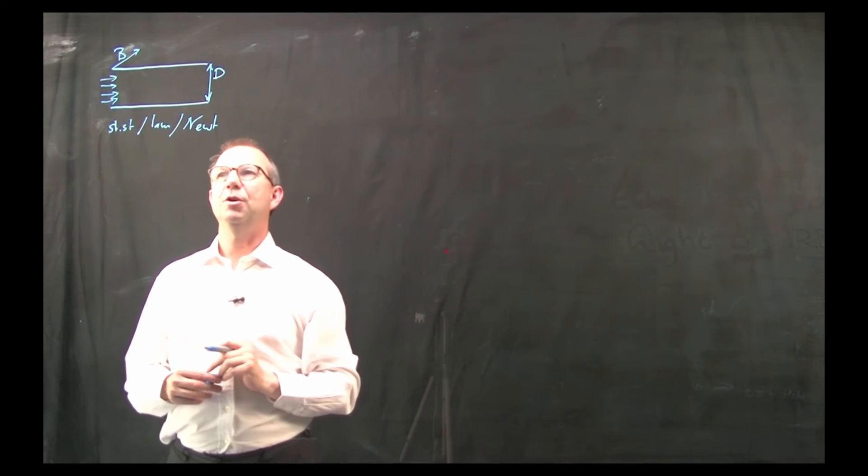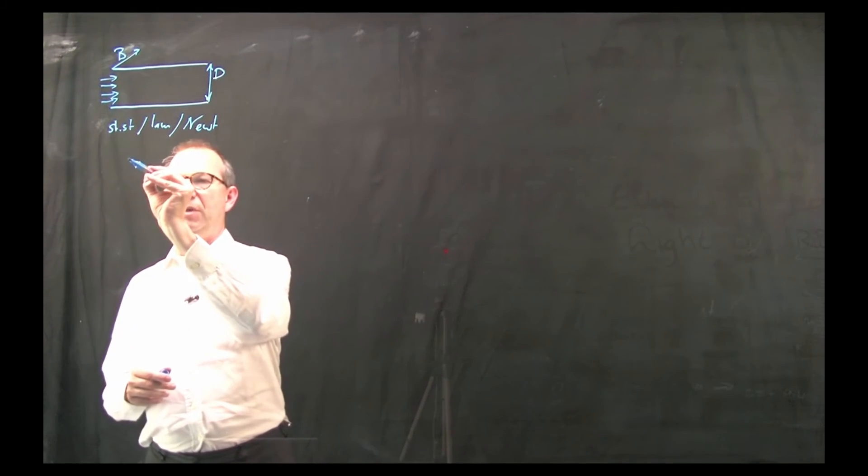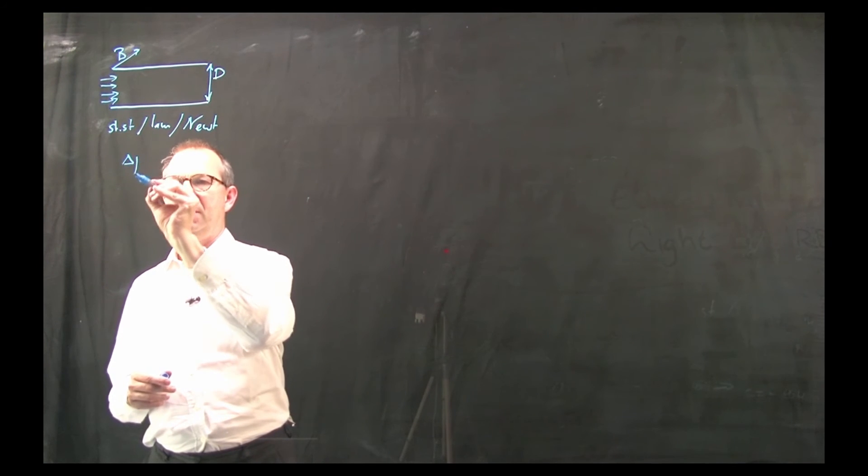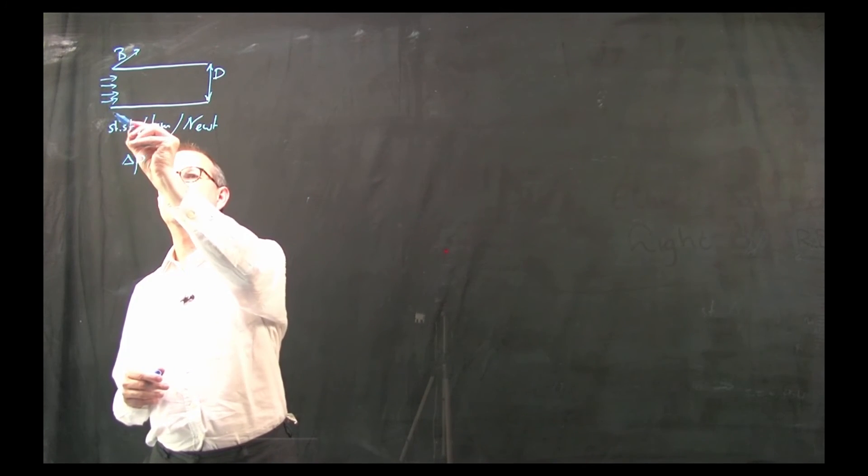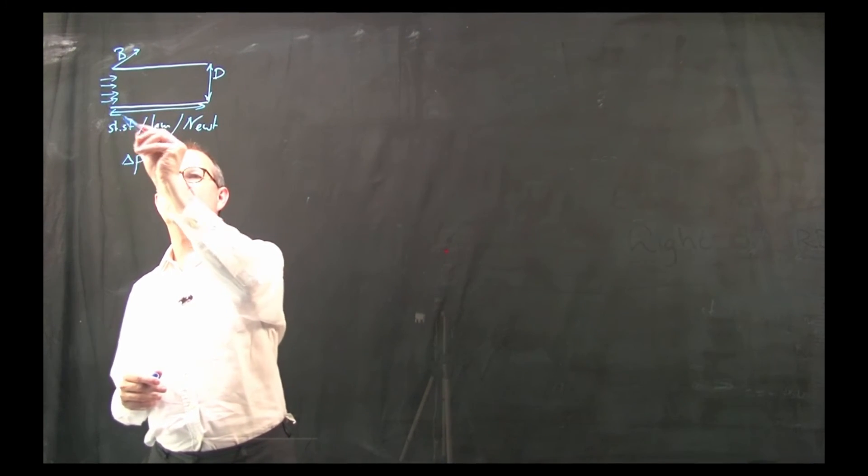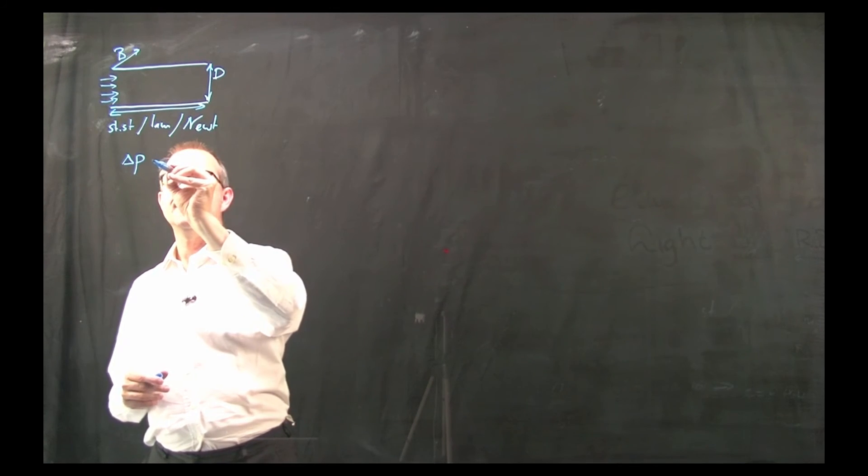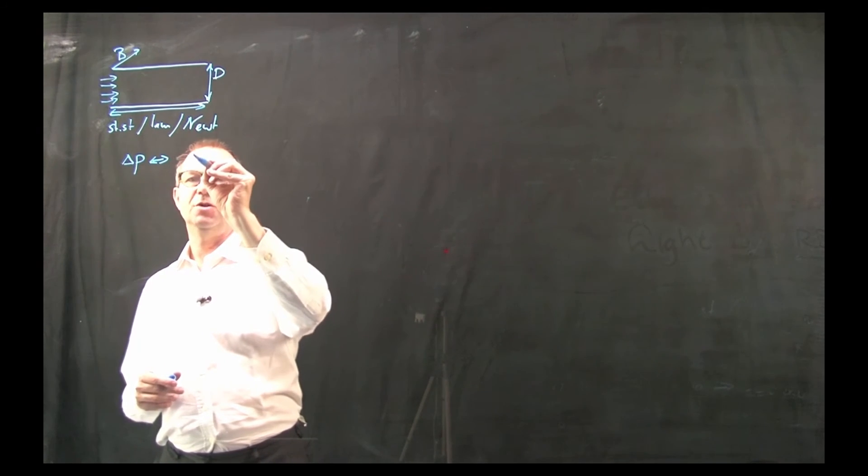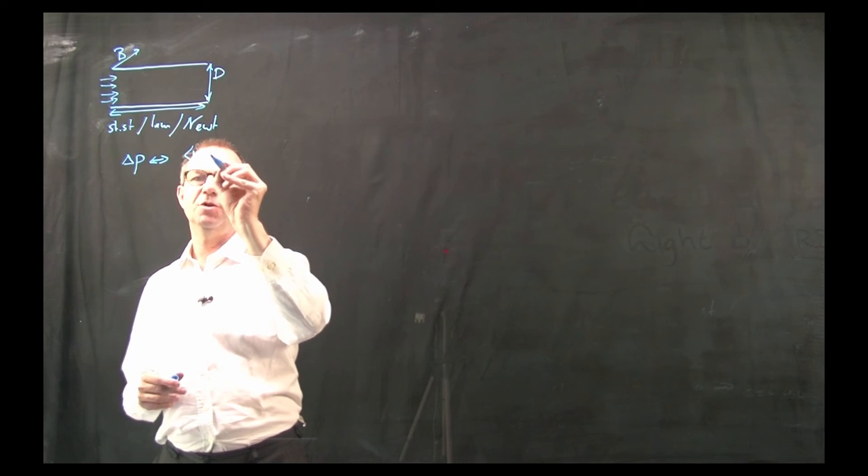What I ultimately would like to know is what is the relation between delta p, the pressure drop over this tube, as a function of the mean velocity.